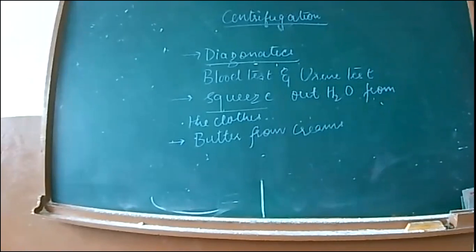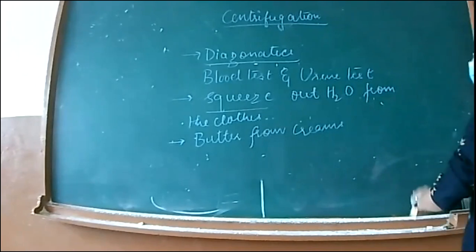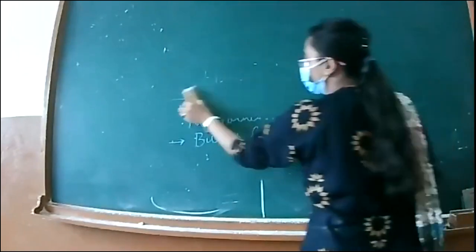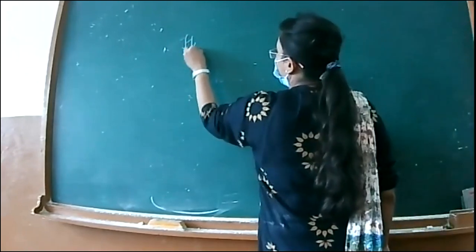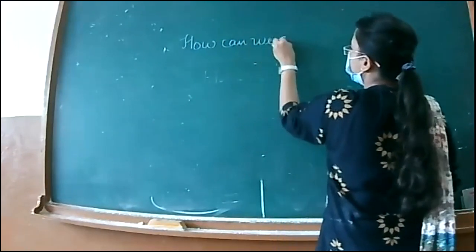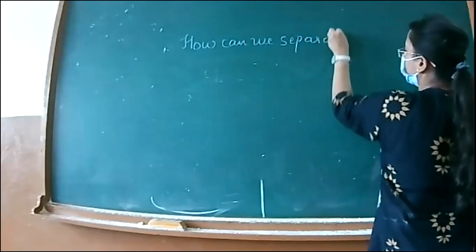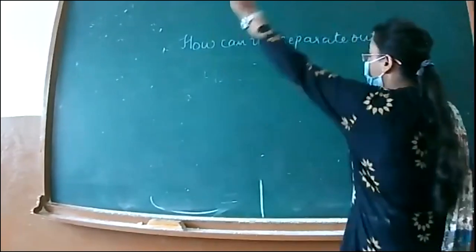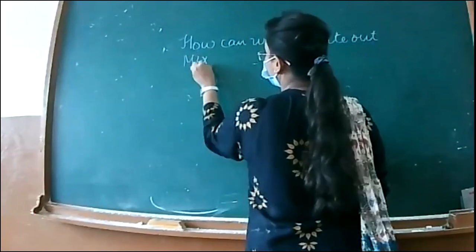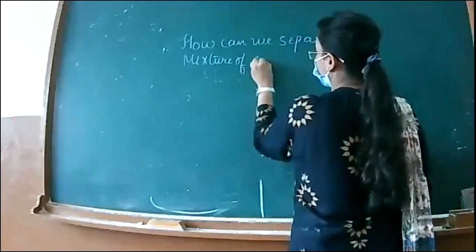So next technique is how to separate a mixture of salt and ammonium chloride. I will be showing you the video. The technique is known as sublimation. How can we separate out a mixture of salt, that is NaCl, not any salt - mixture of salt that is non-volatile.